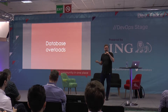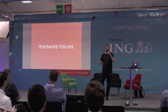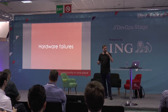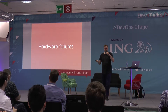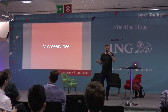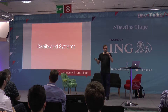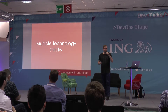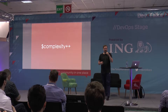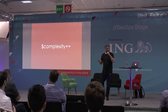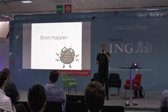Lots of servers means there are failures somewhere — hardware failures that we have to tackle and expect. And since we're doing a microservice architecture, that means you have a distributed system with different components talking to each other. That means also multiple technology stacks, meaning the complexity of the whole system is actually fairly large.